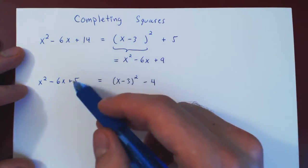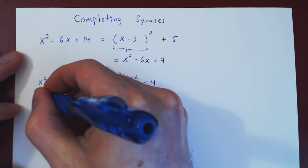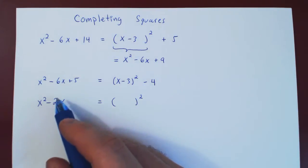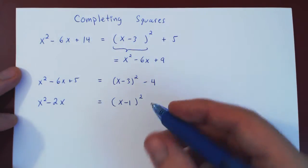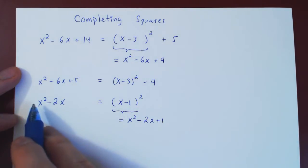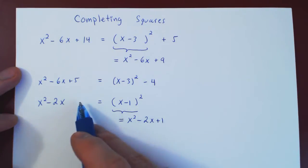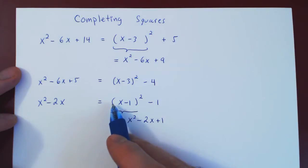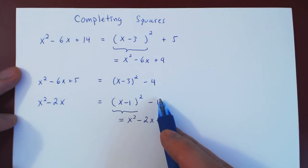What if there is no constant term? It makes no difference. For example, x squared minus 2x: since negative 1 times 2 is negative 2, we go with x minus 1. Squaring gives x squared minus 2x plus 1. We get the right quadratic and the right linear, but we're off by plus 1 and we need a 0. So we subtract 1 and we're done, leaving something squared plus the constant negative 1.